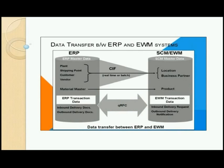When we talk about data transfer, the communication between ECC and EWM involves two types of data: master data and transactional data. Master data includes plant, shipping point, customer, vendor, material, class, characteristics, and batches. This master data goes to the EWM system with the help of CIF — the Core Interface. I will discuss the core interface in detail in the next class. Transactional data communication happens with the help of BAPI calls. We will discuss distribution models and integration models in subsequent sessions.